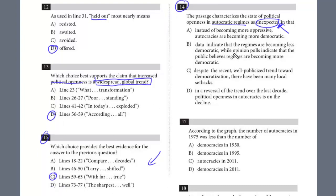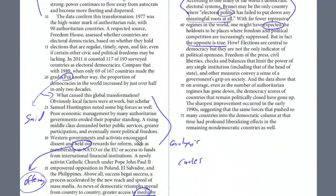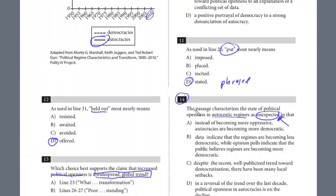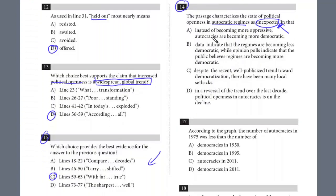Now going back to answer question 14: the state of political openness is unexpected — why? Because even though we'd expect those holdout places to be where freedom and political competition are suppressed, the passage says the opposite is true. Reading it again: 'Even though we might have expected the holdouts to be places where freedom and political competition are suppressed, the opposite is true.' Instead of becoming more oppressive, autocracies are becoming more democratic — that's the answer. That unexpected reversal is the key. The answer is A.